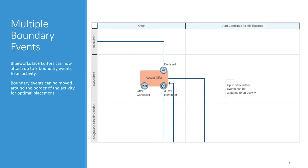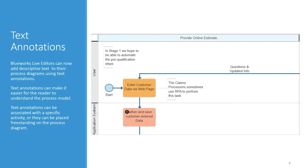Today BlueWorks Live editors can attach a single boundary event to an activity. But we know that you often need to model multiple events attached to an activity, so we've added support for up to three attached boundary events. Editors can drag and drop these events to different locations on their activities to improve diagram readability. You've been asking for a while to have the ability to add descriptive text to your process diagrams to make them more understandable. Currently there are several mechanisms for attaching text documentation to a diagram in BlueWorks Live, but none of those are visible on the diagram itself.